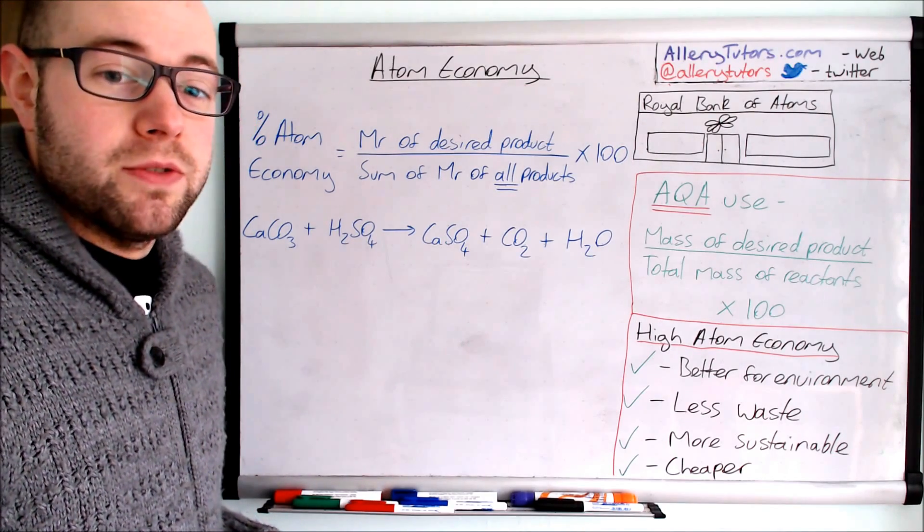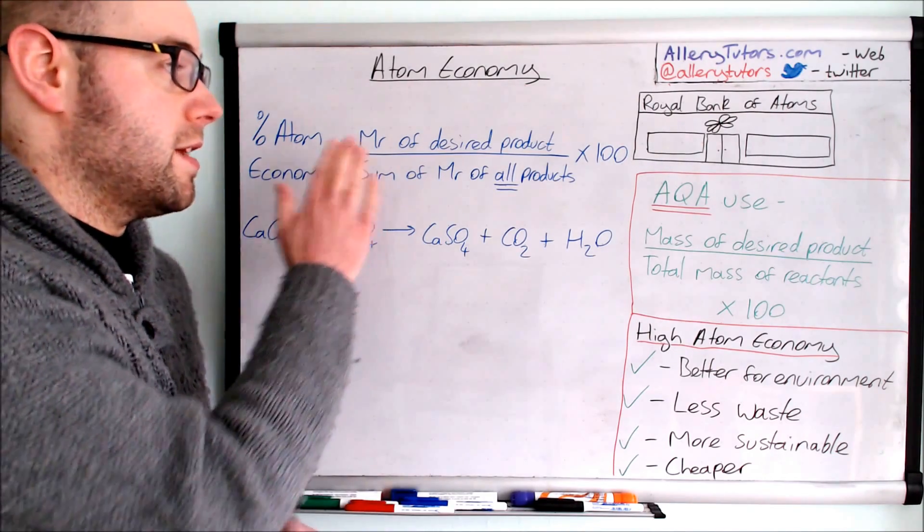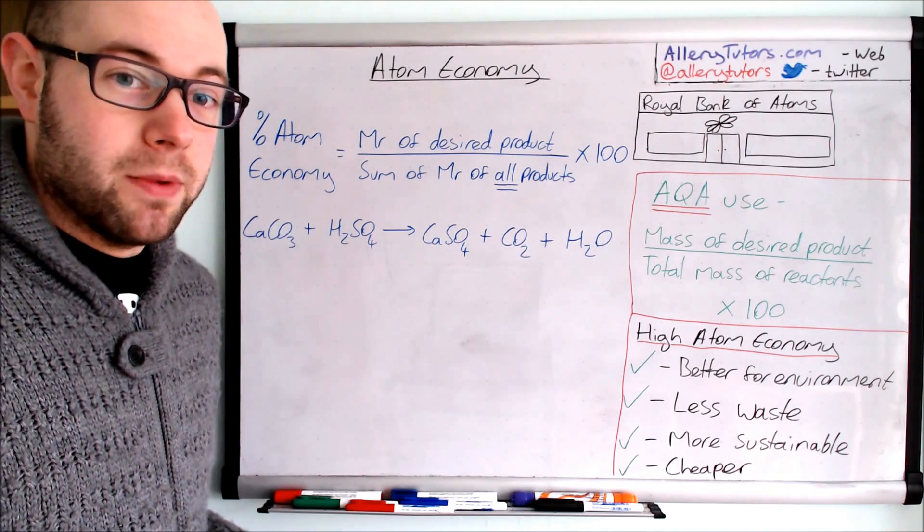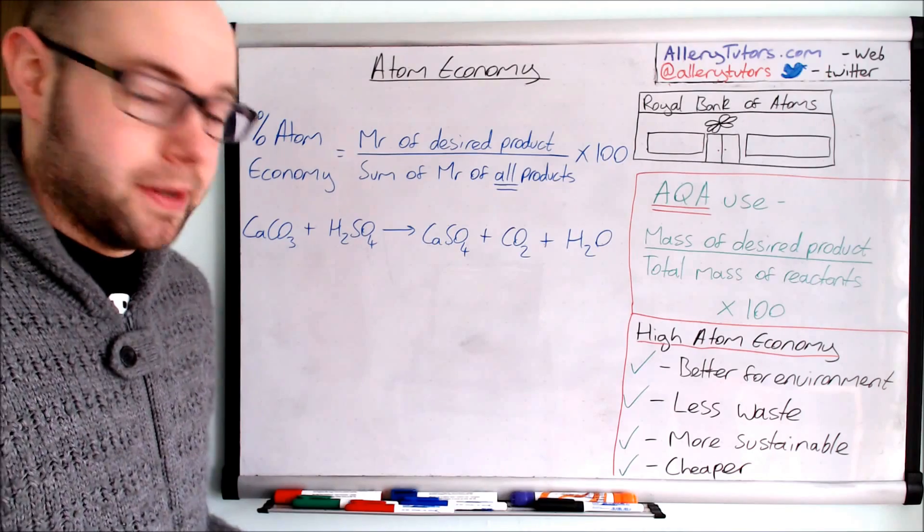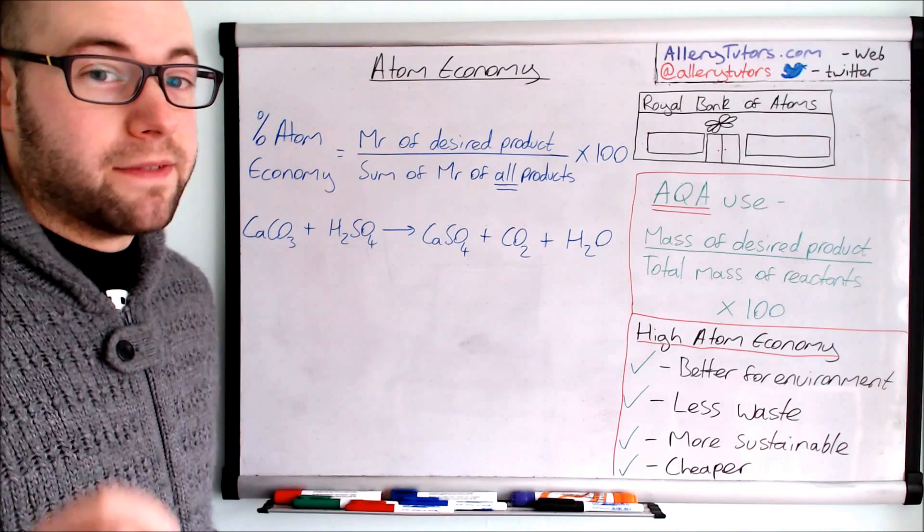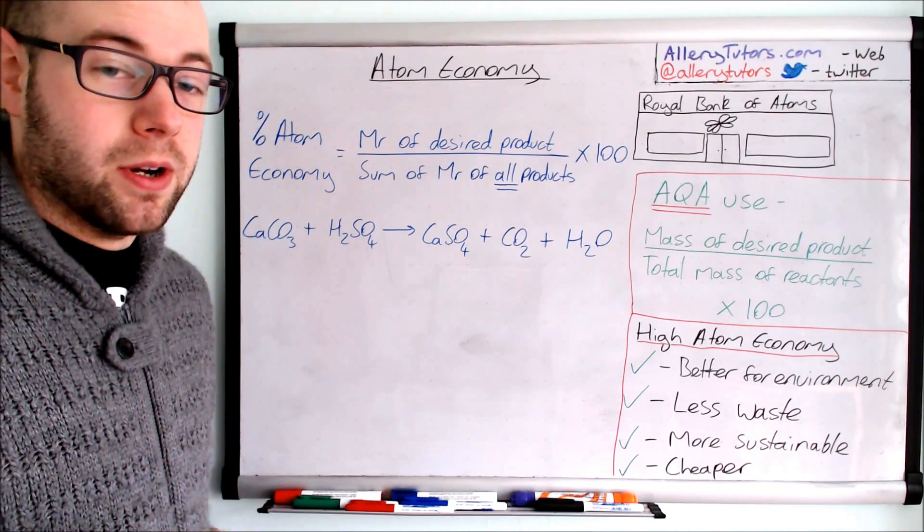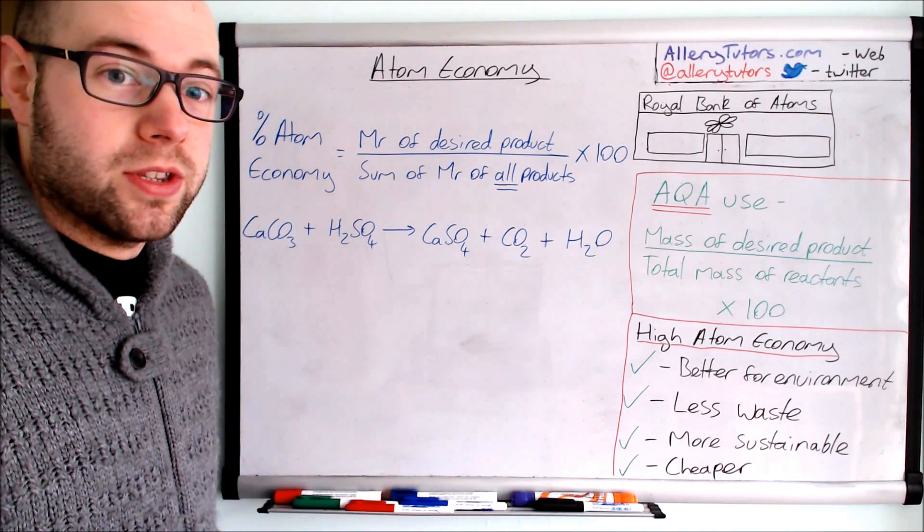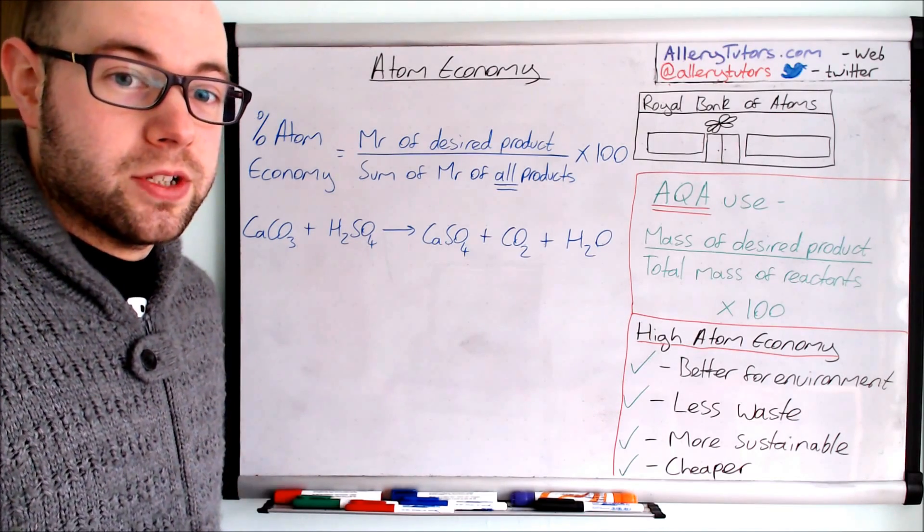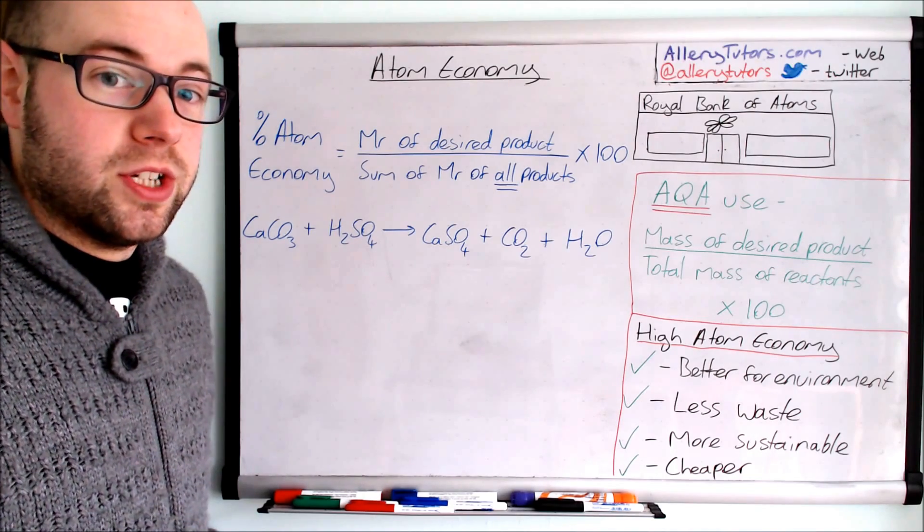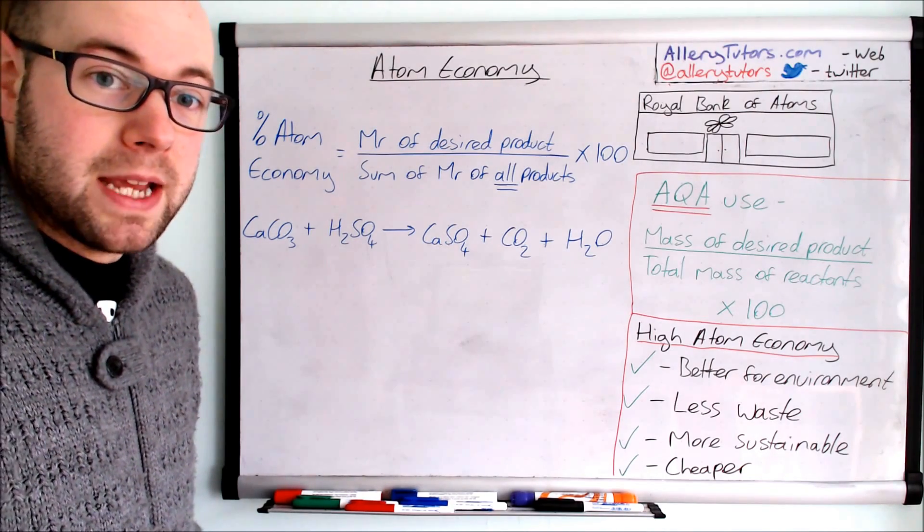Okay, so we're going to use this formula here to work out the mass of a desired product and calculate its atom economy. Now you can't get this mixed up with percentage yield. You can actually have reactions that have a low atom economy but a high percentage yield or vice versa. This is looking at how efficient a reaction is whereas percentage yield is looking at the mass of product that you're actually making.